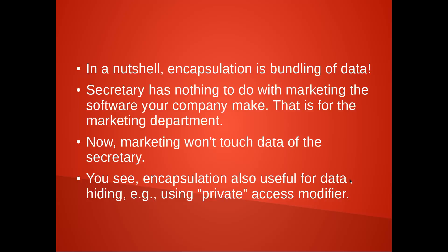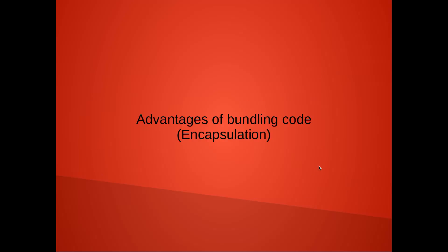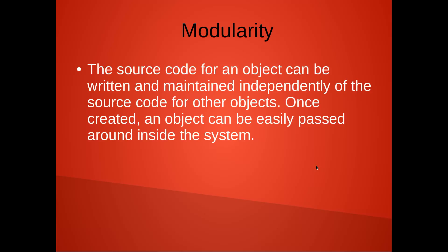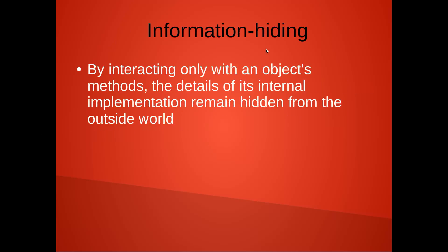But if you set it to private, class B cannot access the object. Finally, we come to the advantages of bundling code. We have modularity — the source code for an object can be written and maintained independently of the source code for other objects. Once created, an object can be easily passed around inside the system. For example, we have our getName method — we're using getName for setSalary, getSalary, and setRaise. This is what we call easily passing around inside the system.